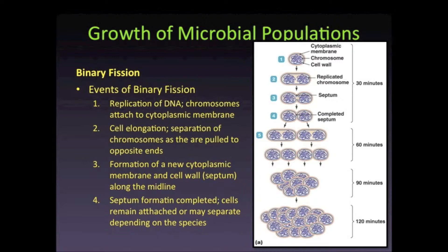Following separation of the chromosomes, a new cell membrane and cell wall known as a septum begin to form along the midline of the cell. When the septum is completed, two daughter cells are formed. Cells may separate and exist as individual cells or they may remain attached. If they continue to remain attached, they may undergo further rounds of binary fission. The plane in which the division takes place determines whether those cells that remain attached will form a chain or form a cluster of bacterial cells.